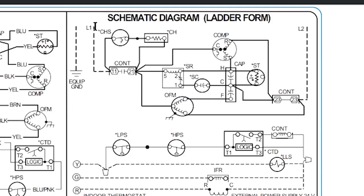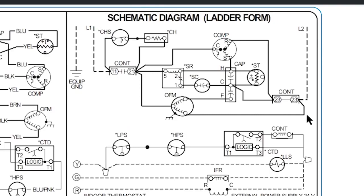The dashed lines mean we installed those wires. An equipment ground is always shown as little lines making an inverted pyramid. We've got L1, a compressor contact — and notice it's not connected to the rest of the contactor, it's just out by itself. Down here is the 24-volt side of the circuit, coming from a separate external power supply — 24 volts from the air handler. This is a condenser diagram.